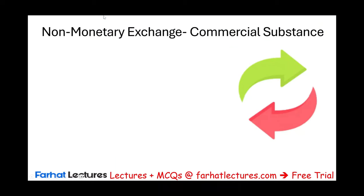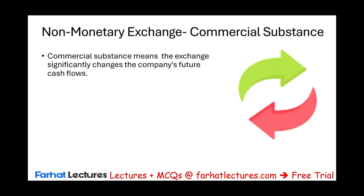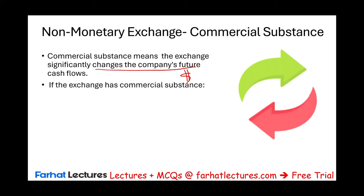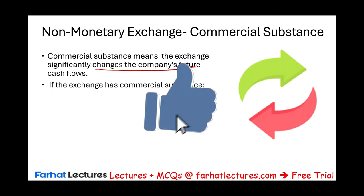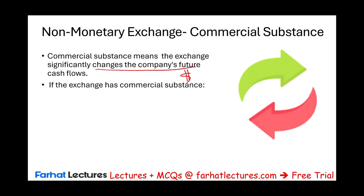We say that an exchange has commercial substance if it significantly changes the company's future cash flow — meaning the amount of money will change, the timing will change, and the riskiness will change. It means the exchange is not just done for shuffling papers or booking gains and losses for accounting purposes; it has real business sense. If the exchange has commercial substance, we need to recognize both the gain and the loss.